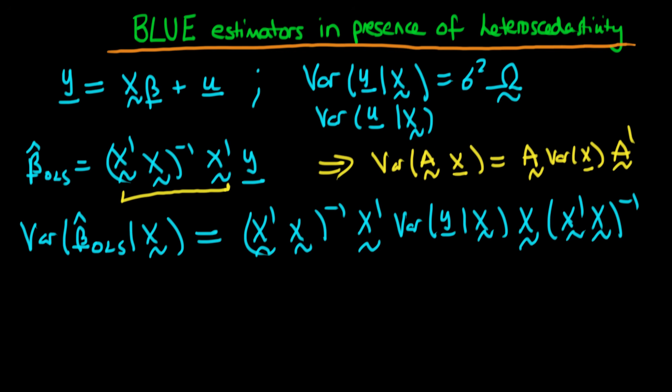Furthermore, if we were to assume that we did have homoscedastic errors—so remember, homoscedastic errors is if we replace this matrix omega by the identity matrix.